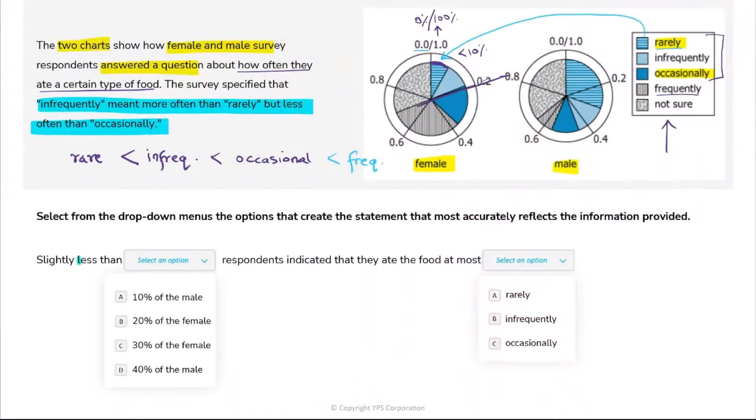Now let's get back to the question at hand. Slightly less than dash respondents - so this is about how many respondents, and it's not an actual number, if you see it's a percentage - and it's 10% of male or female. That means you will have to see both of the charts here.